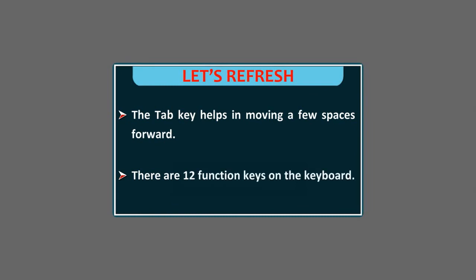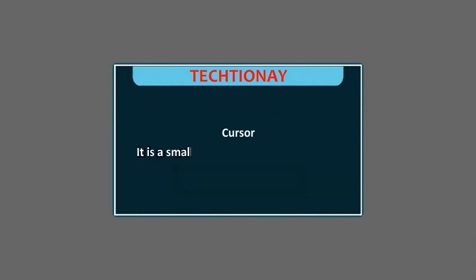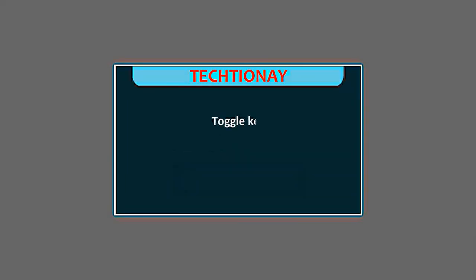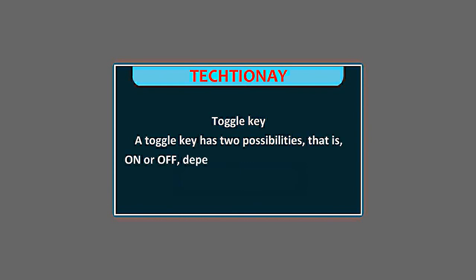Dictionary: Cursor — it is a small blinking line on the monitor. Toggle key — a toggle key has two possibilities, that is on or off, depending on the current setting.